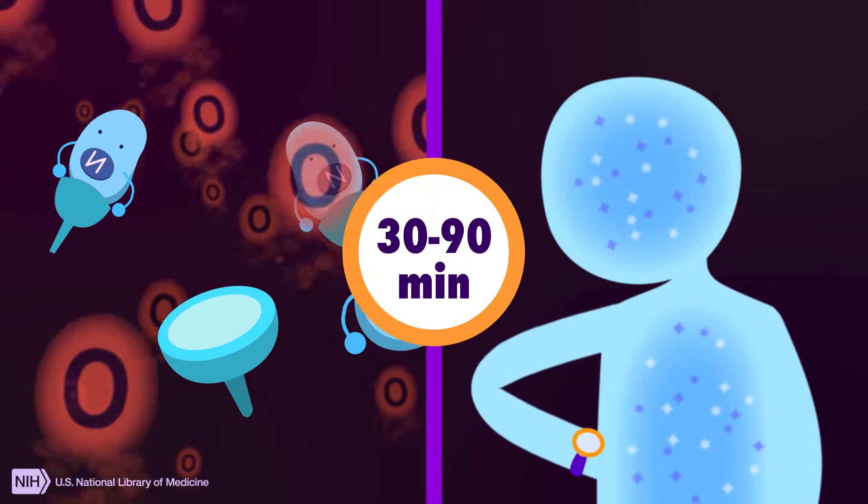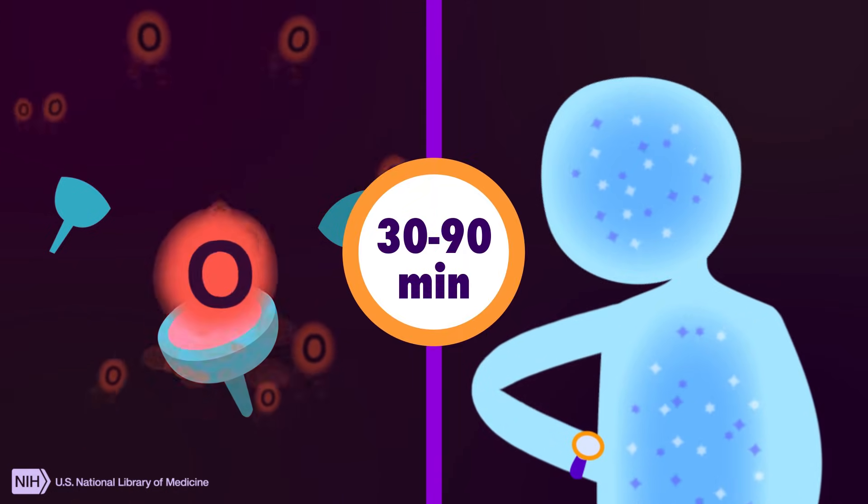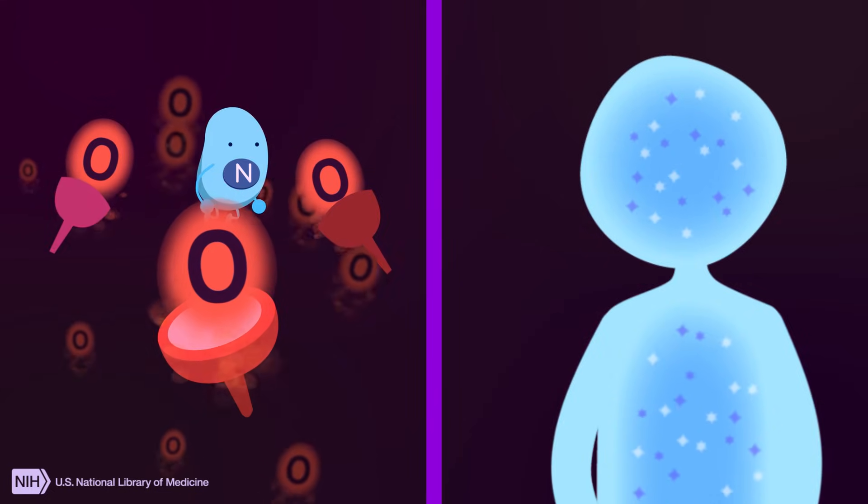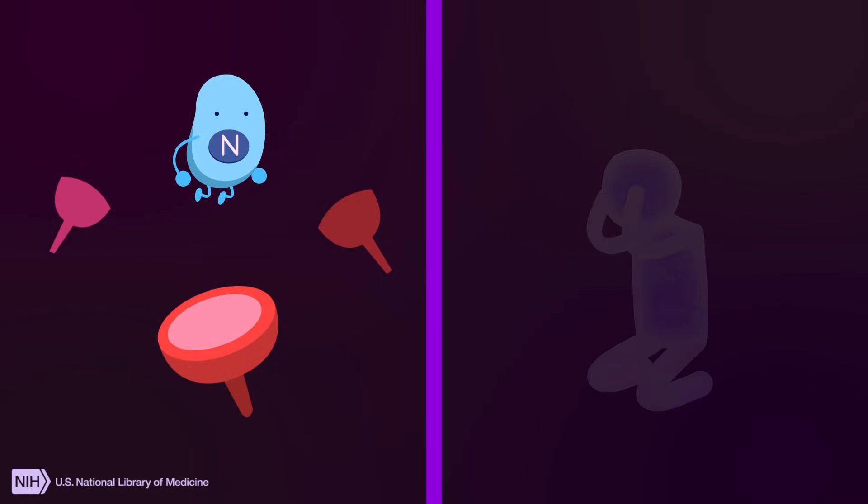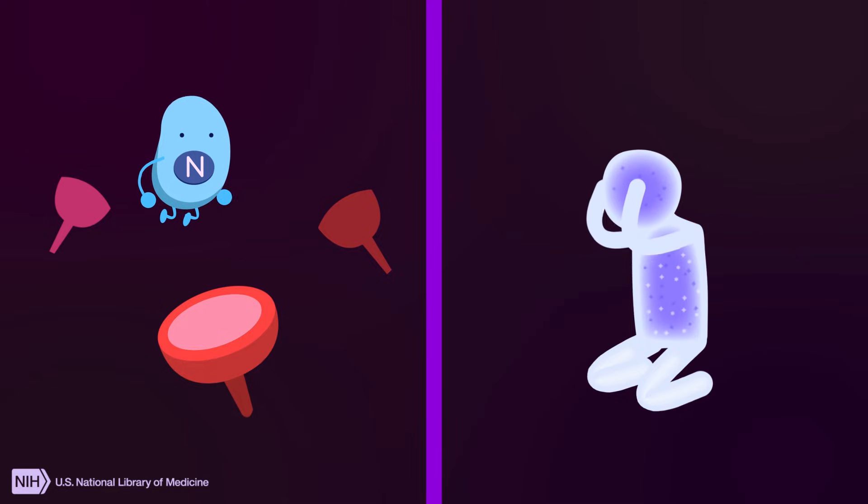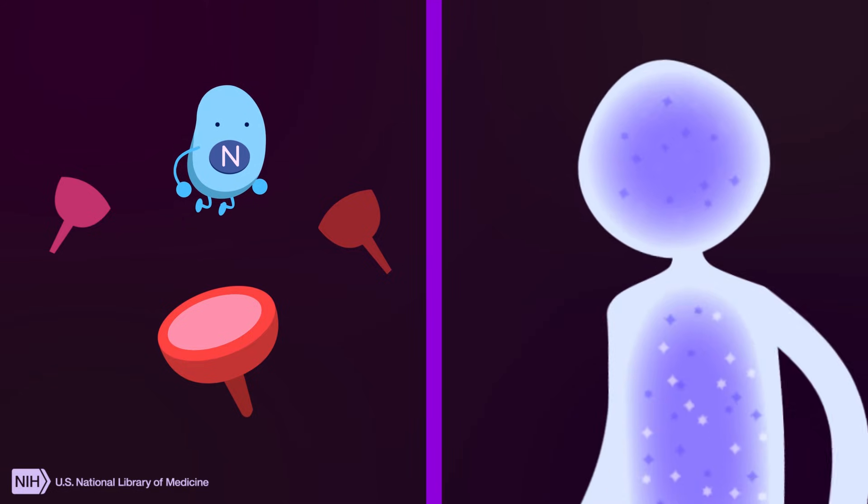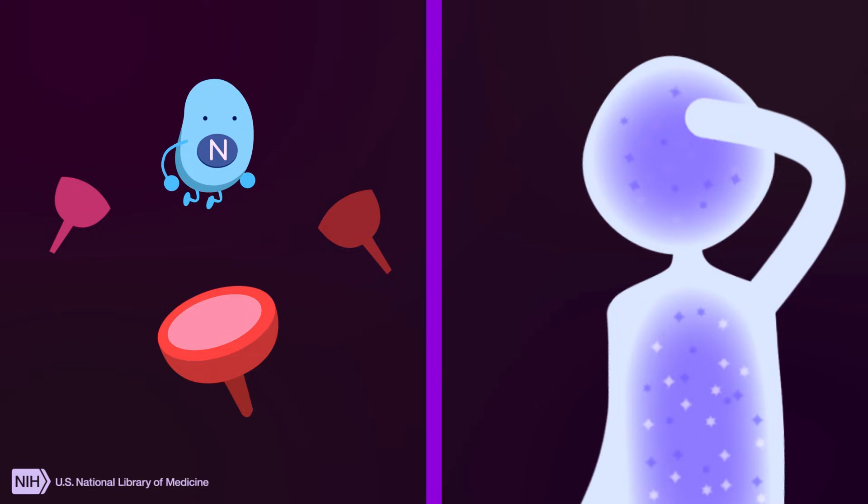Naloxone works for 30 to 90 minutes before the opioids return to their receptors. Naloxone may promote withdrawal because it knocks opioids off the receptors so quickly. But otherwise, naloxone is safe and unlikely to produce side effects.